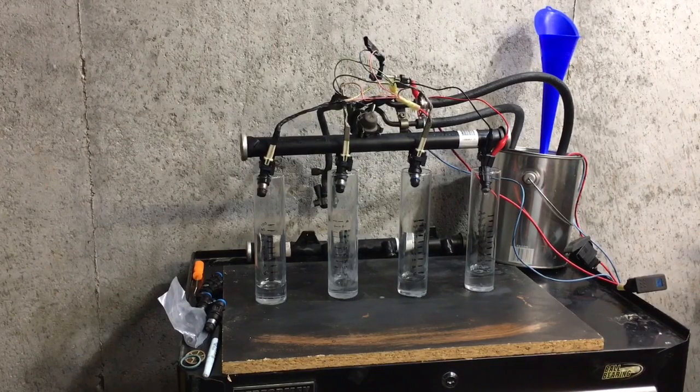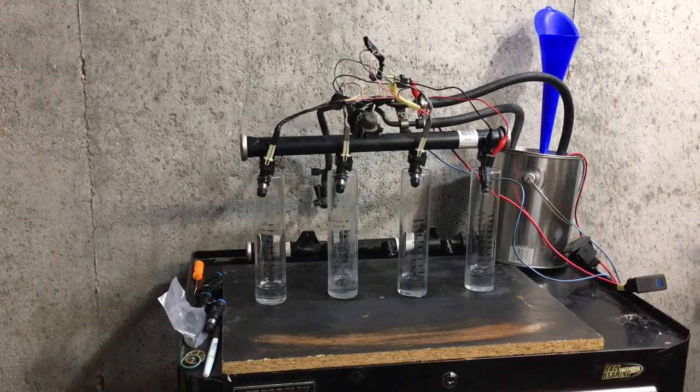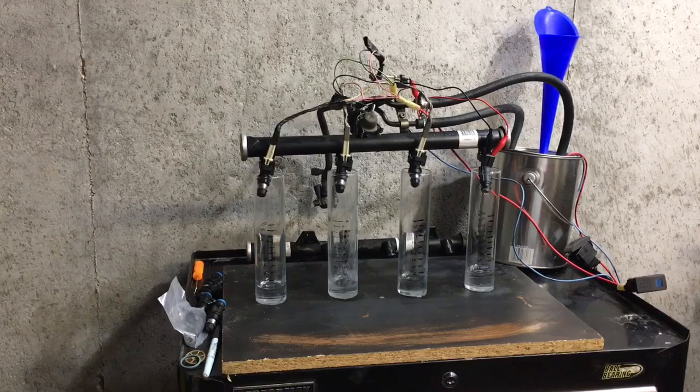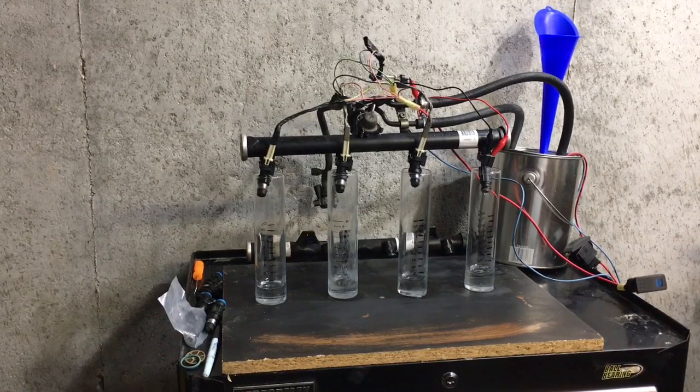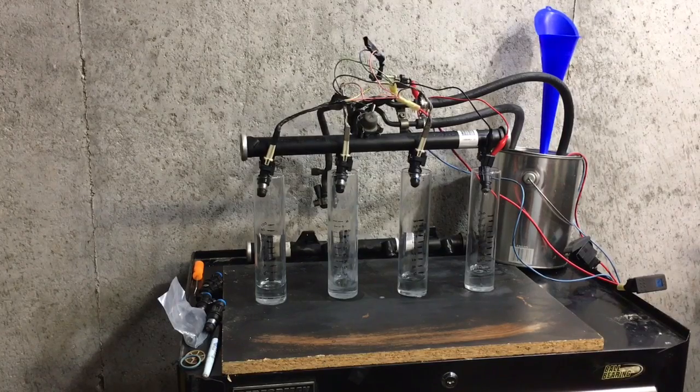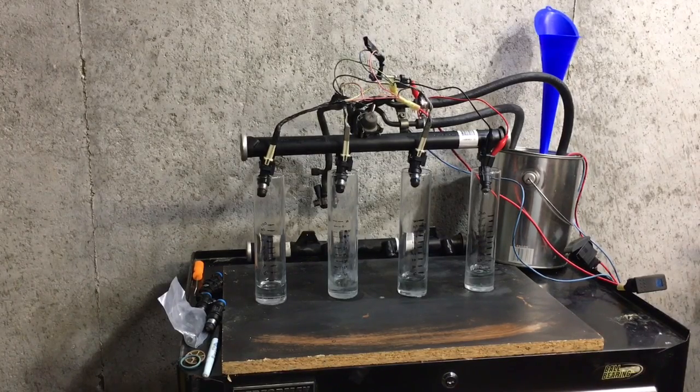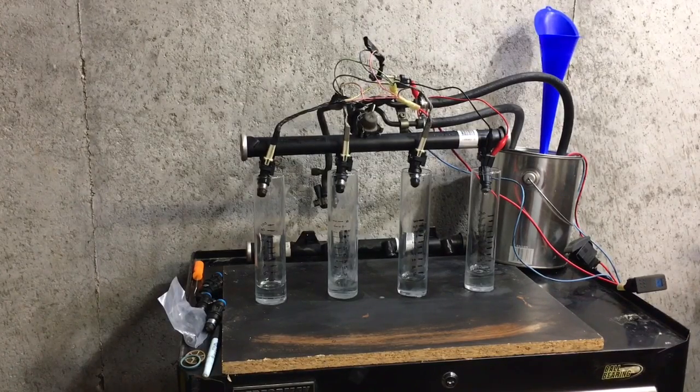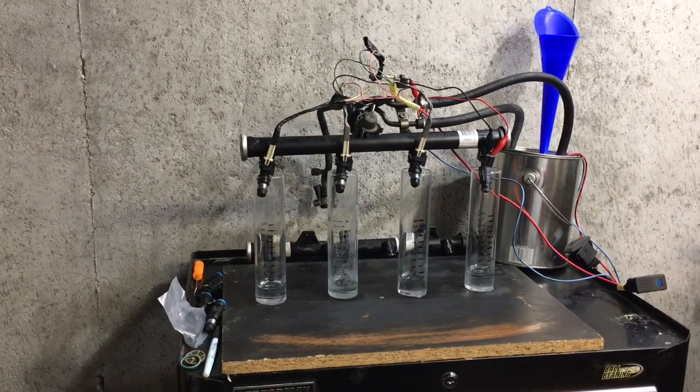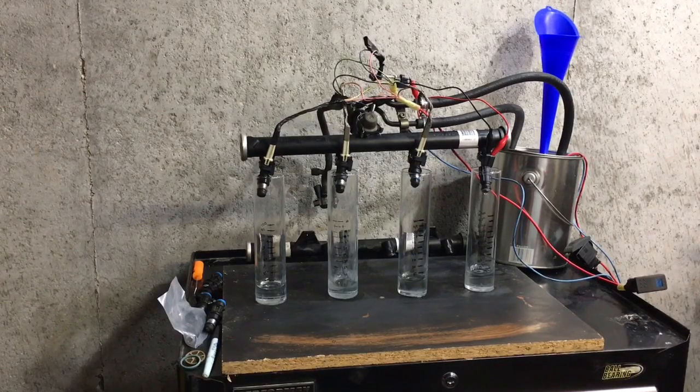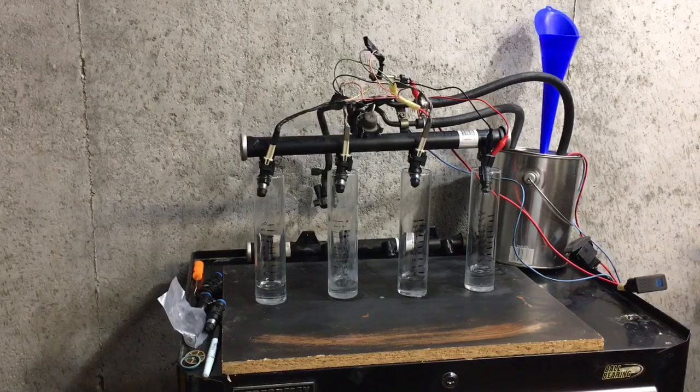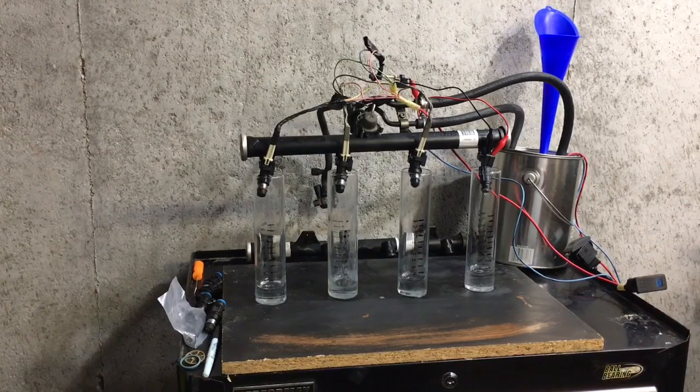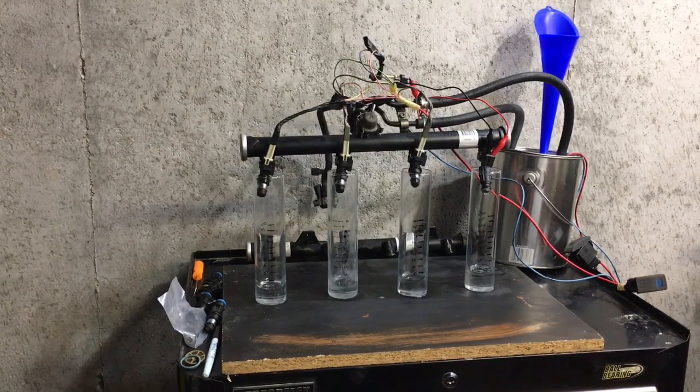On the far left, beaker number one, is a factory truck injector with two holes. A lot of what controls the volume of fuel are the holes in the cap on the end of the injector. Different size holes give you different spray patterns, but the more holes or if you remove that cap, it has a large impact on how much fuel will actually flow.